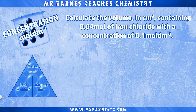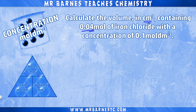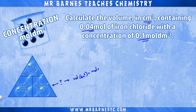Let's look at a rearranging question. Calculate the volume in centimetres cubed containing 0.04 moles of iron chloride with a concentration of 0.1 moles per decimetre cubed. Here we have the concentration and need the volume. Using our triangle, we can see that the volume is moles divided by concentration.